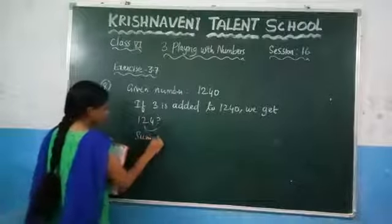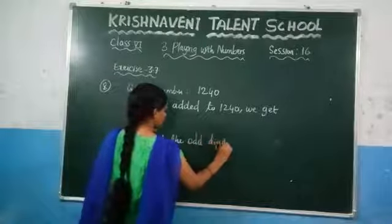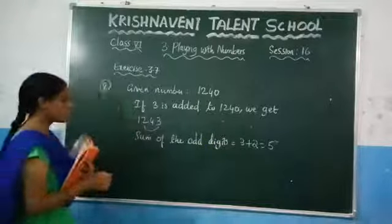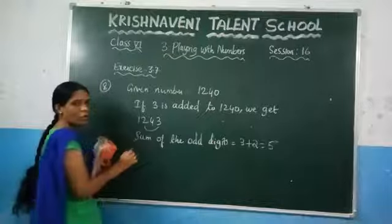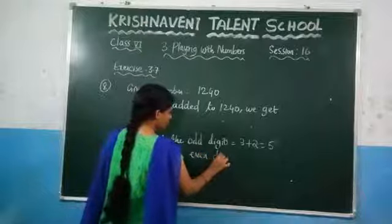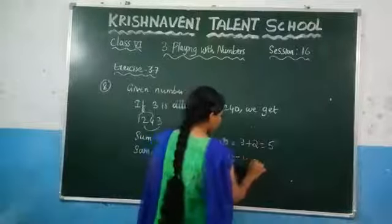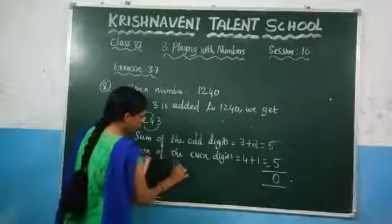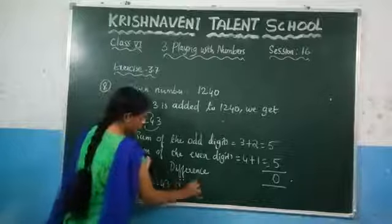For this number 1243, take the sum of the odd position digits. The first, second, third, and fourth digits — 1 and 3 are the odd-position digits. The sum of the odd-position digits is 3 plus 2 = 5. The sum of the even-position digits is 4 plus 1 = 5. The difference between these two numbers is 0. According to the divisibility rule for 11, since the difference is 0, we can say that 1243 is divisible by 11. Therefore, the nearest number to 1240 which is divisible by 11 is 1243.